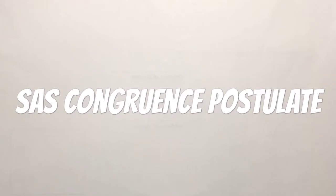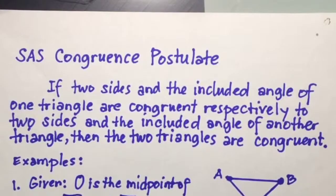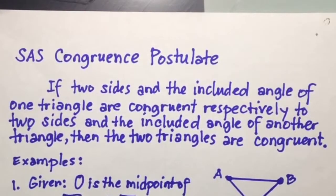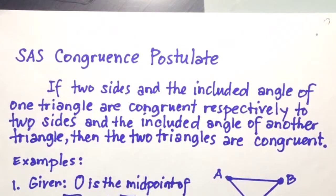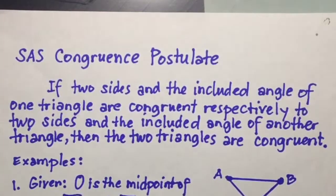For today's video I'm going to discuss the SAS congruence postulate. The SAS congruence postulate states that if two sides and the included angle of one triangle are congruent respectively to two sides and the included angle of another triangle, then the two triangles are congruent.